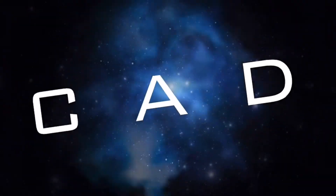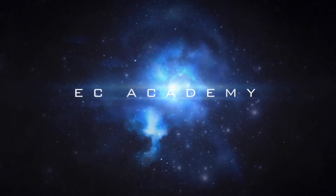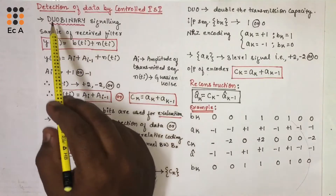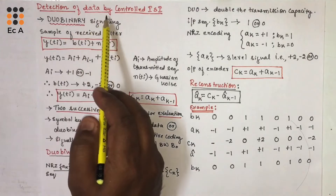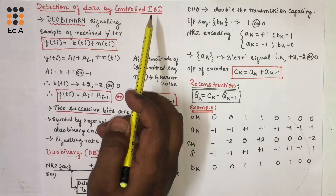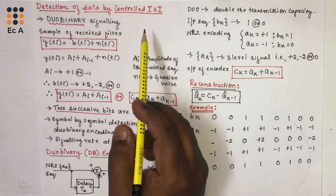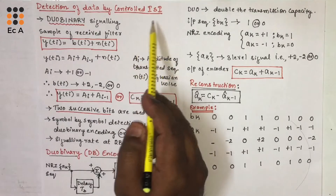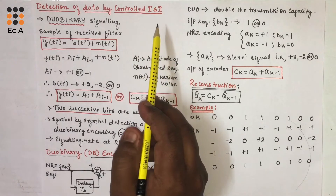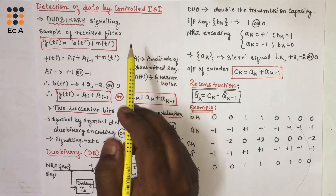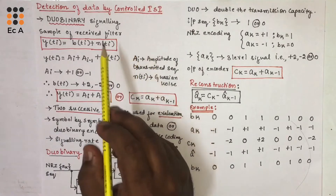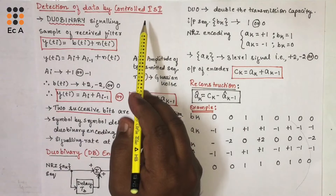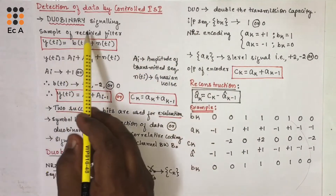Hello friends, welcome to ESEA Academy. In this lecture, let us understand detection of data by controlled intersymbol interference. In the previous lecture, we understood how to reduce the effect of ISI using Nyquist criteria. Today, let us understand the detection of data by controlled ISI using Duobinary signaling.